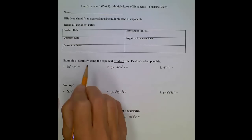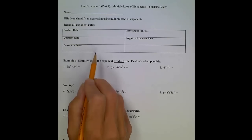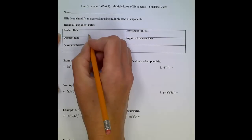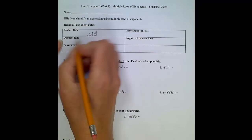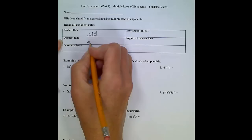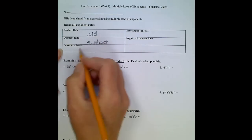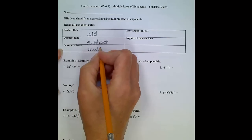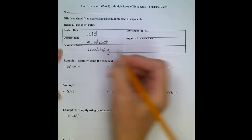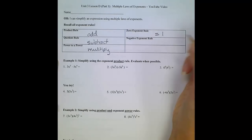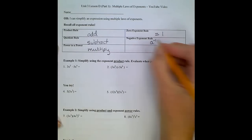Before we start applying, let's review our rules very quickly. The product rule: when we're multiplying two terms together, we add the exponents. The quotient rule: when we're dividing, we subtract the exponents. If we raise a power to a power, we multiply the exponents. The zero exponent rule: anything raised to the zero power equals 1. And the negative exponent rule means anything raised to a negative power gets relocated.